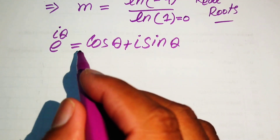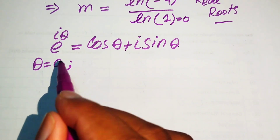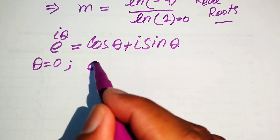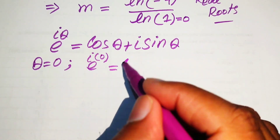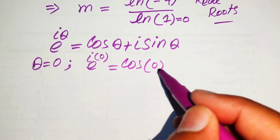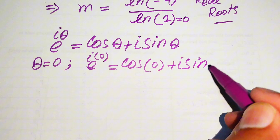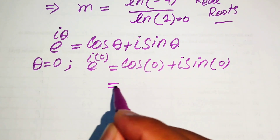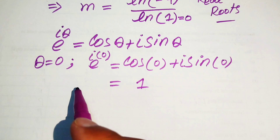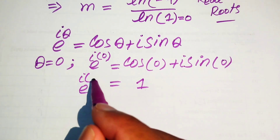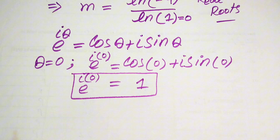First we check if Euler's identity holds for theta equals 0. Substituting, e to the power of iota times 0 equals cos 0 plus iota sine 0. Since cos 0 equals 1 and sine 0 equals 0, we get e to the power of iota times 0 equals 1.